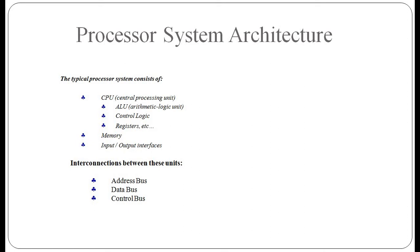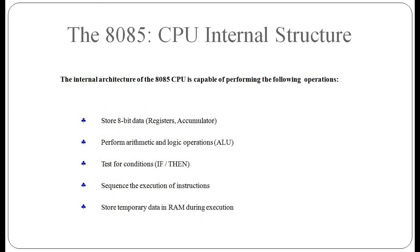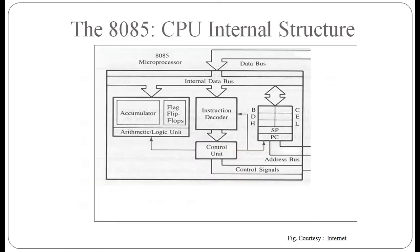We will go through these points one by one. The internal architecture of the 8085 CPU is capable of performing the following operations: it can store 8-bit data in registers or the accumulator, perform arithmetic and logic operations via the ALU, test for conditions like if-then sequences in execution of instructions, and store temporary data in RAM during execution.